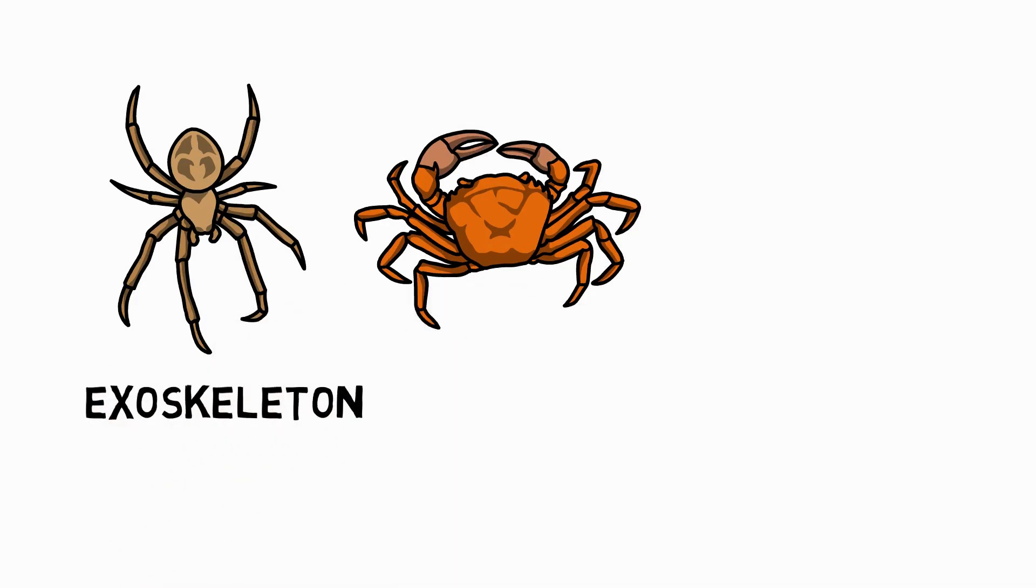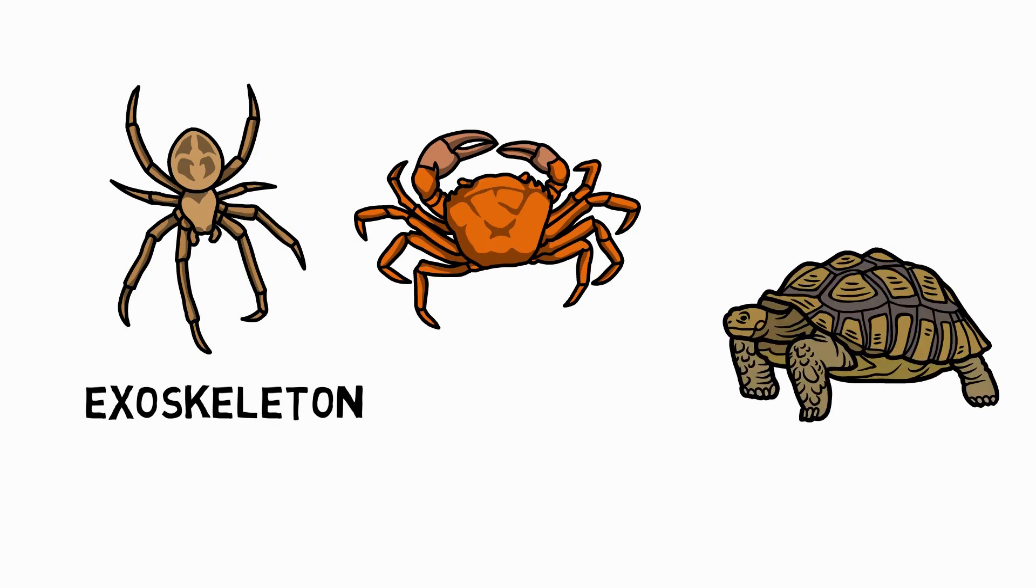And some animals have a skeleton both inside and outside their body. A tortoise, for example, has an exoskeleton as part of its ribs and spine. This protects its organs and body from predators or from damage by the environment.